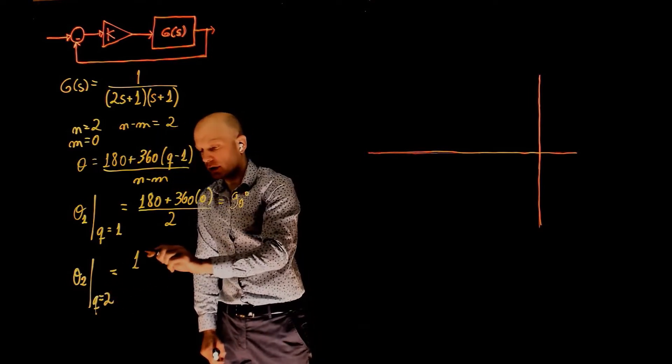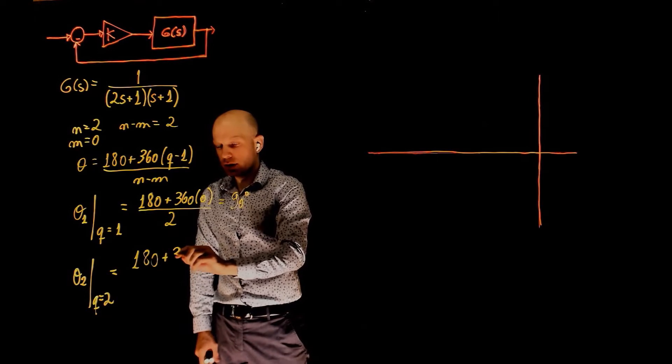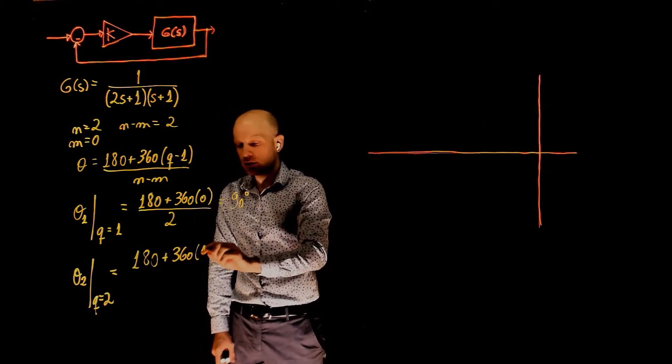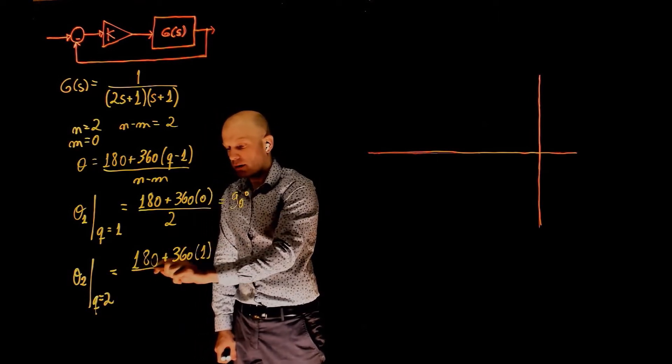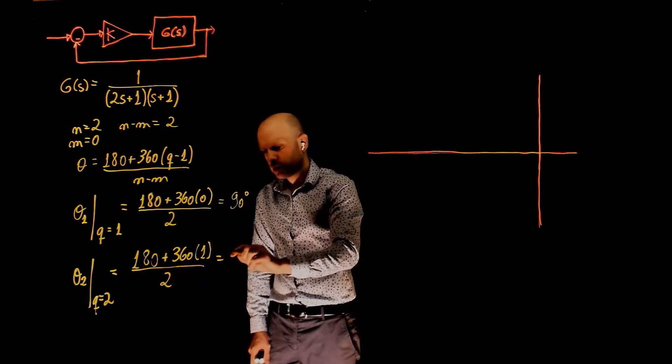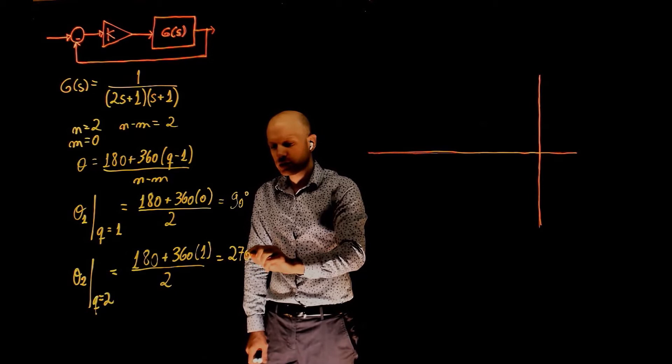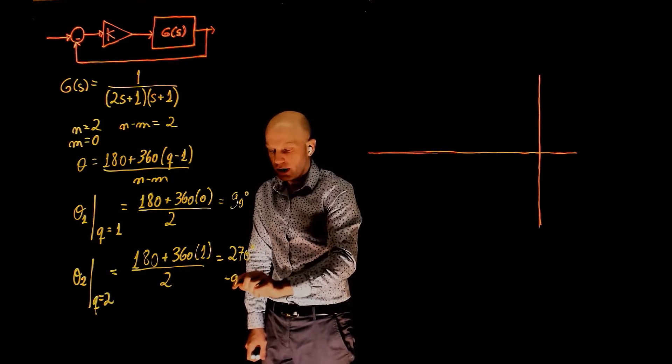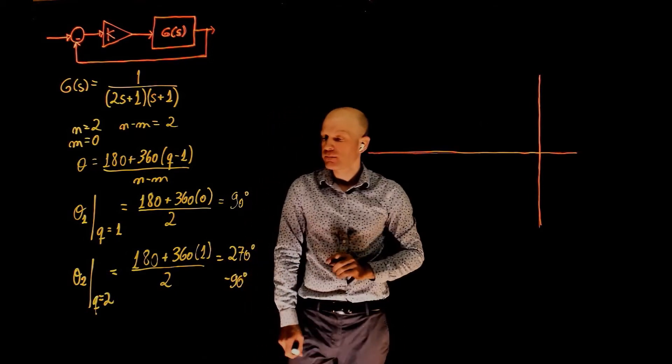It's going to be 180 plus 360 times 1 divided by 2. This is 270 degrees or negative 90 degrees. It's the same.